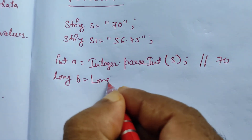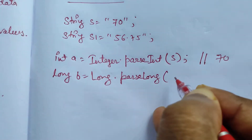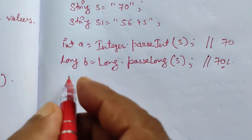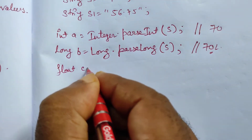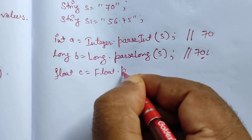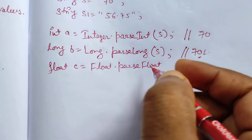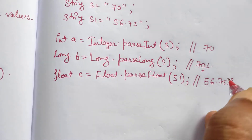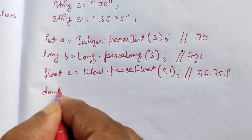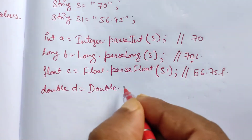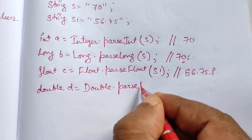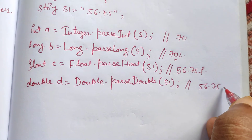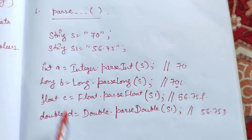Similarly, to convert to long: long b = Long.parseLong(s), answer will be 70L. Suppose we also have String s1 = "56.75". To convert to float: float c = Float.parseFloat(s1), answer will be 56.75f. To convert to double: double d = Double.parseDouble(s1), answer will be 56.75. So using the parse function we can convert a numeric string into these primitive data types.